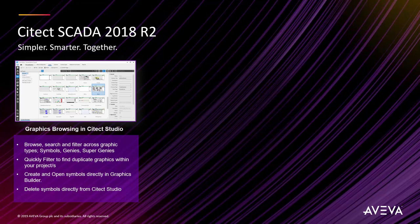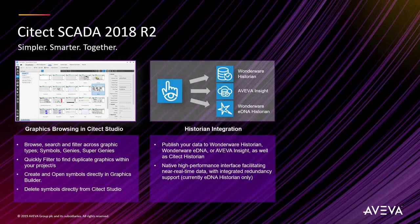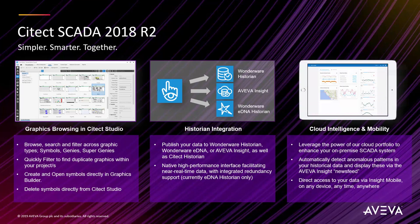2018 R2 continues the engineering efficiency theme, providing native graphics browsing and management functionality right in Cytec Studio, alleviating some of the tedious workflows of earlier releases and significantly improving the user experience. Combined with tighter historian integration to both on-premise and cloud-hosted offers, it provides a platform with which customers can easily extend their data beyond the control room and benefit from intuitive collaboration tools, mobile access, and powerful operational insights.